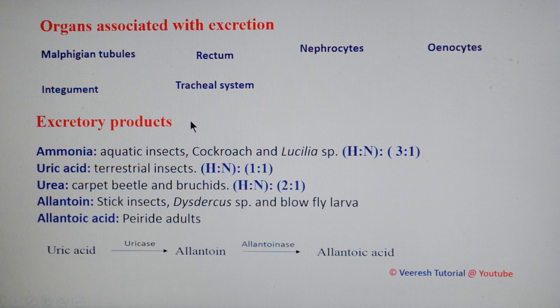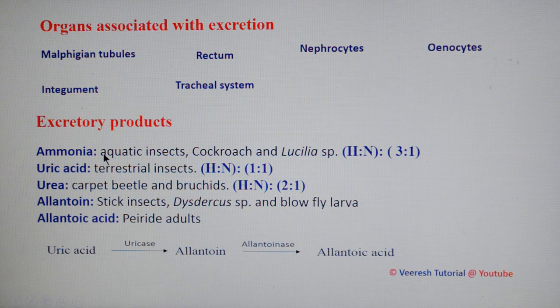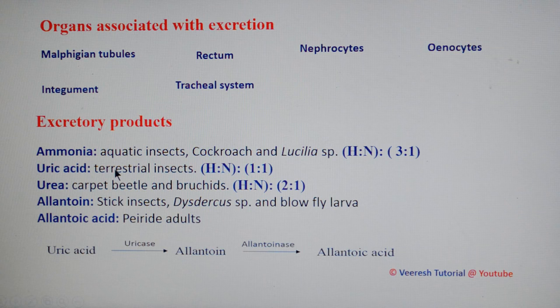In aquatic insects and cockroach Leucophaea, ammonia is the primary nitrogenous end product. It is highly toxic and contains more than 85% nitrogen. It requires more water to eliminate from the insect body — three molecules of hydrogen are required to eliminate one molecule of nitrogen. This type of excretion is called ammonotelism. In terrestrial insects, uric acid is the primary nitrogenous end product. It is relatively harmless and requires less water to eliminate, at a ratio of 1:1, and this is called uricotelism.